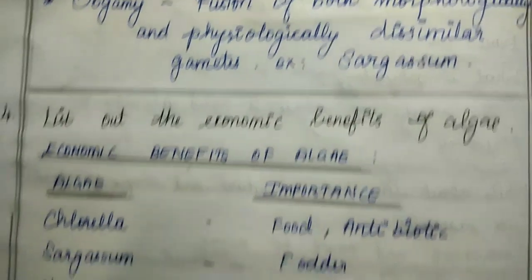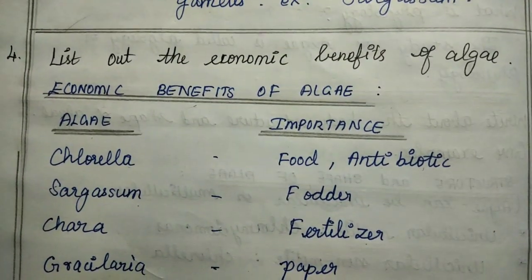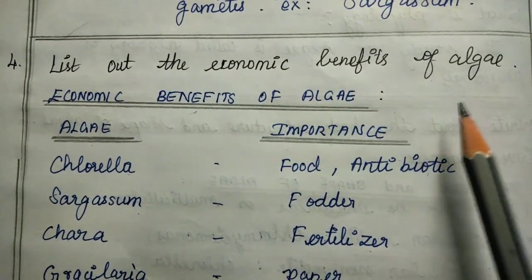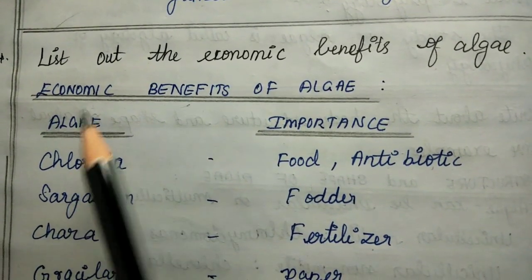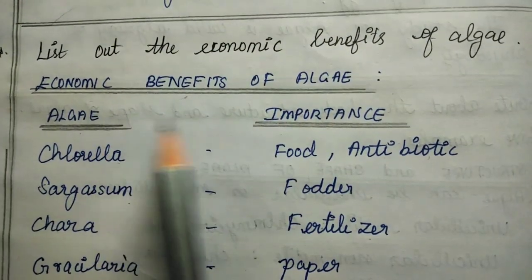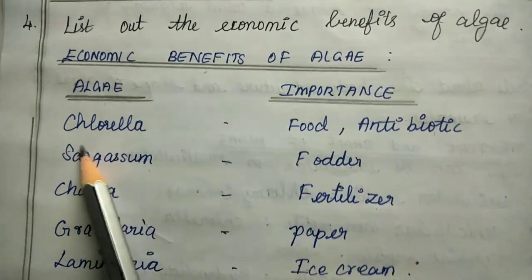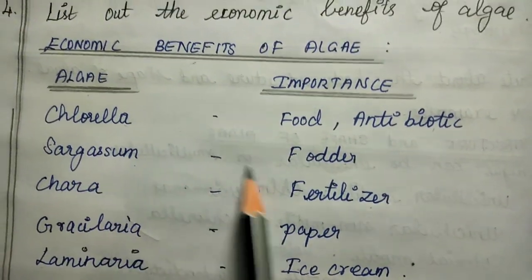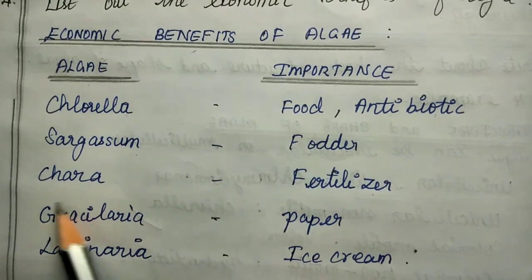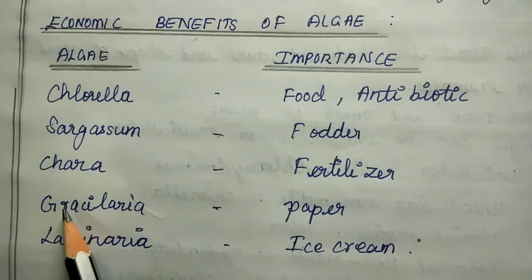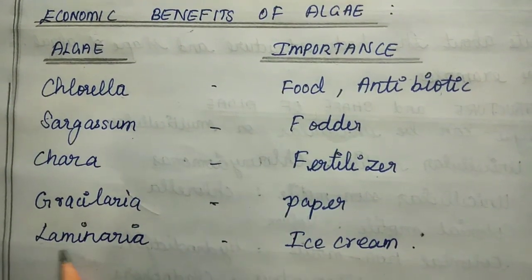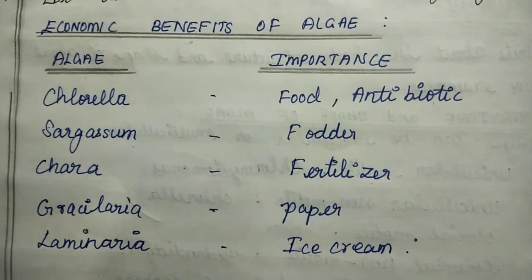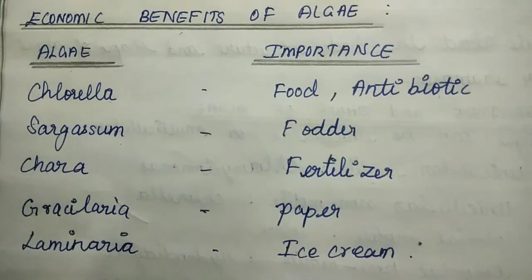Fourth question: list out the economic benefits of algae. Chlorella is used as food and has antibiotic use. Sargassum is used as food. Chara is used as fertilizer. Gracilaria is used for paper. Laminaria is used in ice cream production.